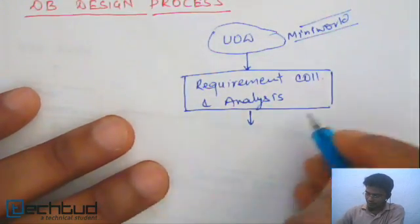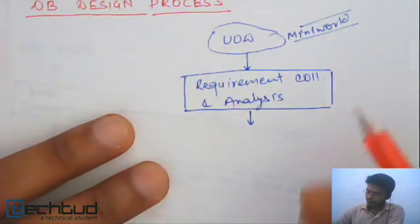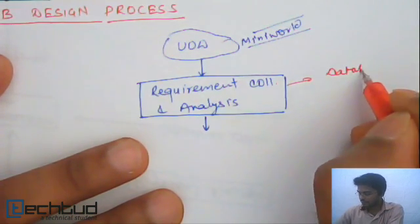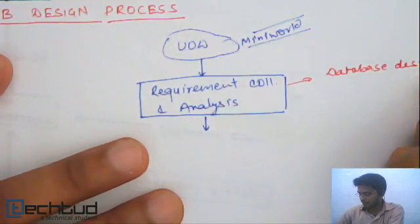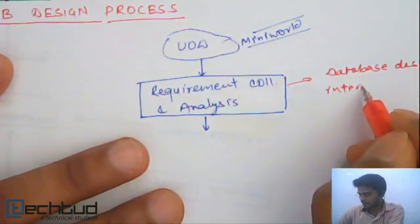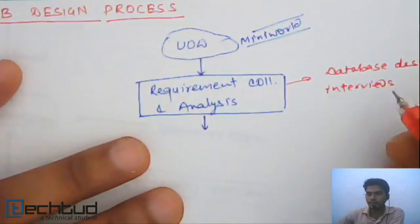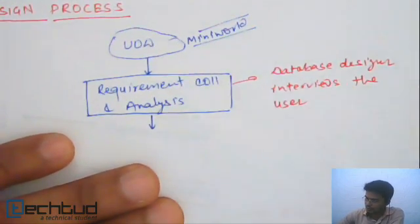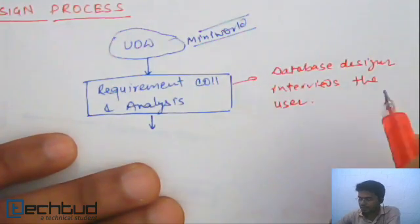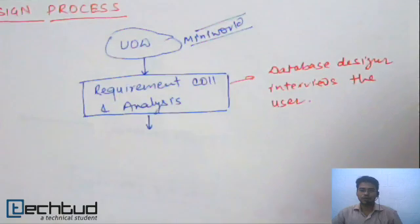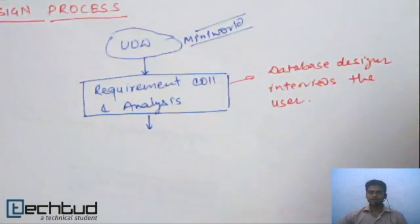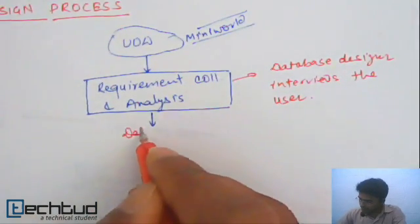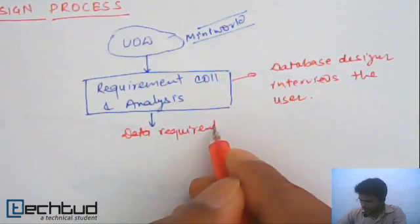In this step, as the database designer, we interview the user and try to find out what the transactions or requirements actually are. The output of this step will basically be the data requirement. This is the first step of our database design process.